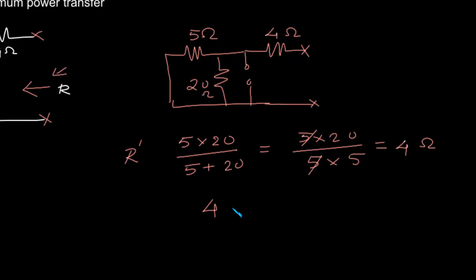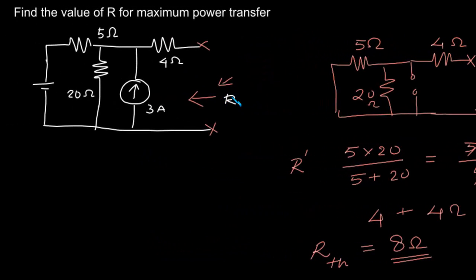4 in series with 4 Ohm. That gives the resistance R as 8 Ohm. That is the Thevenin's resistance looking into this terminal is 8 Ohm.